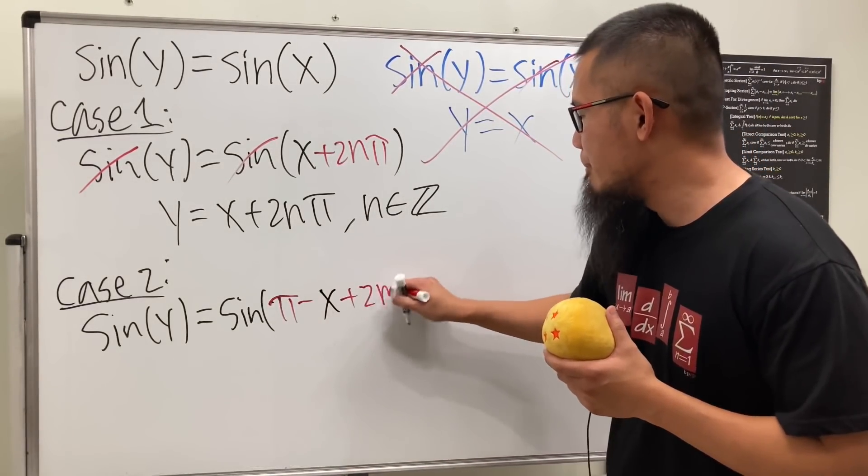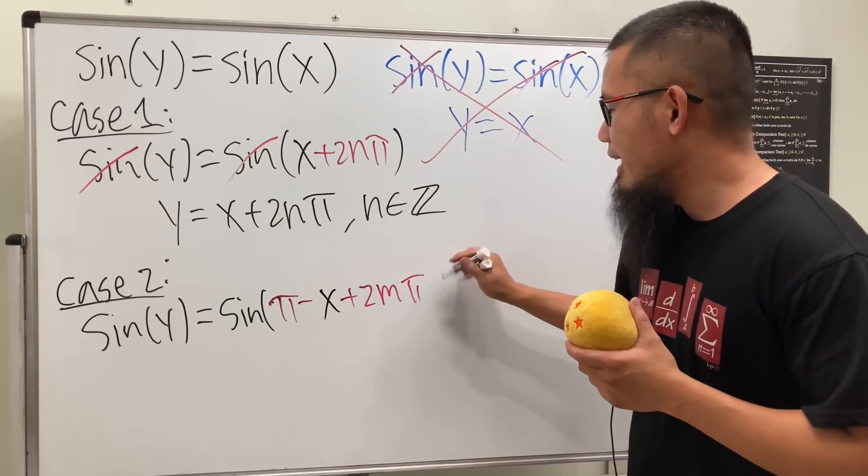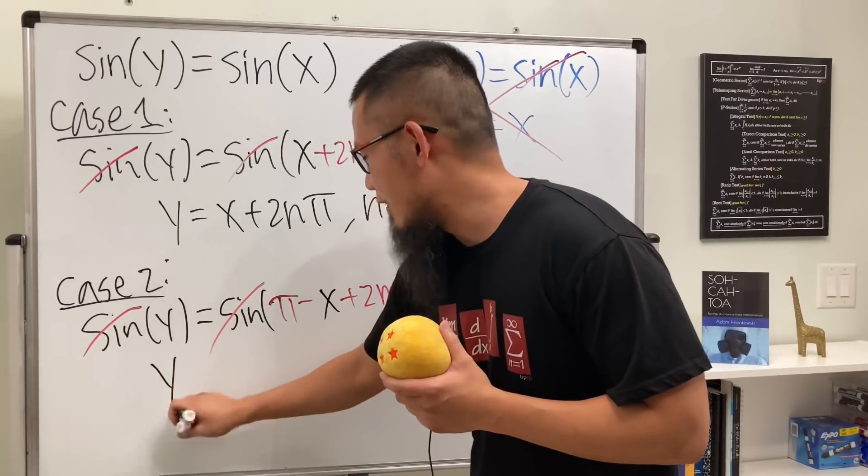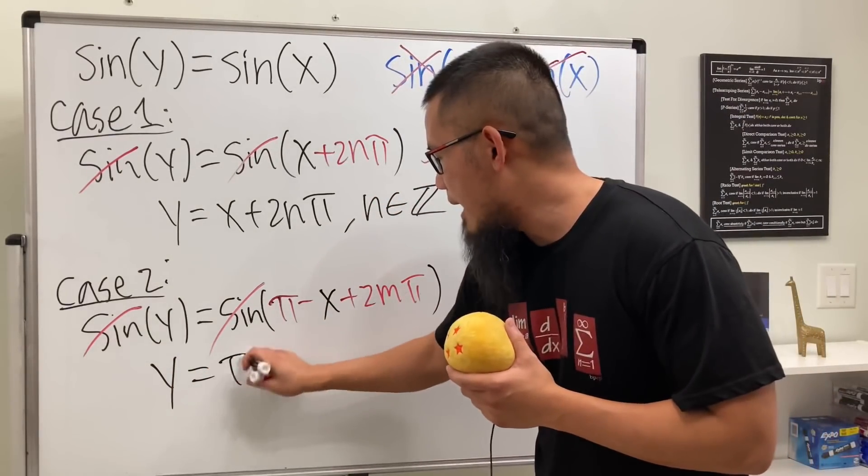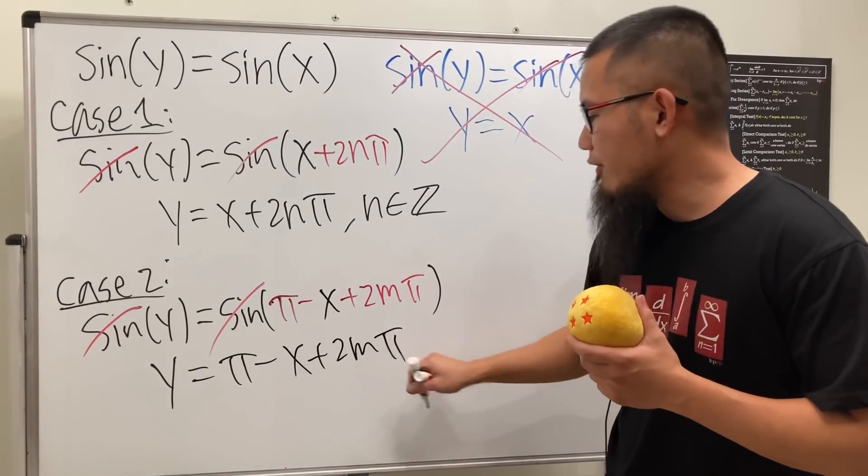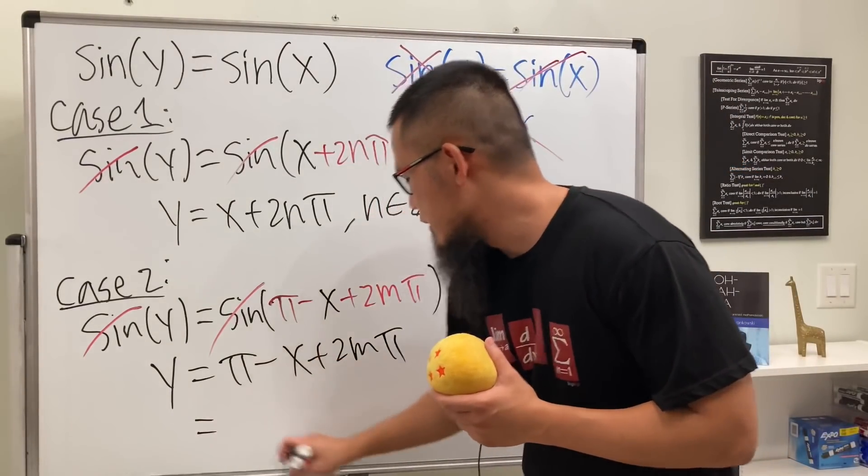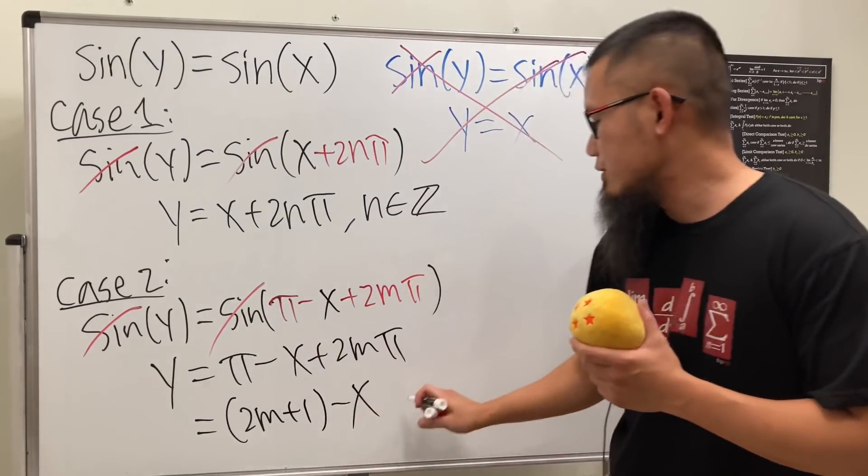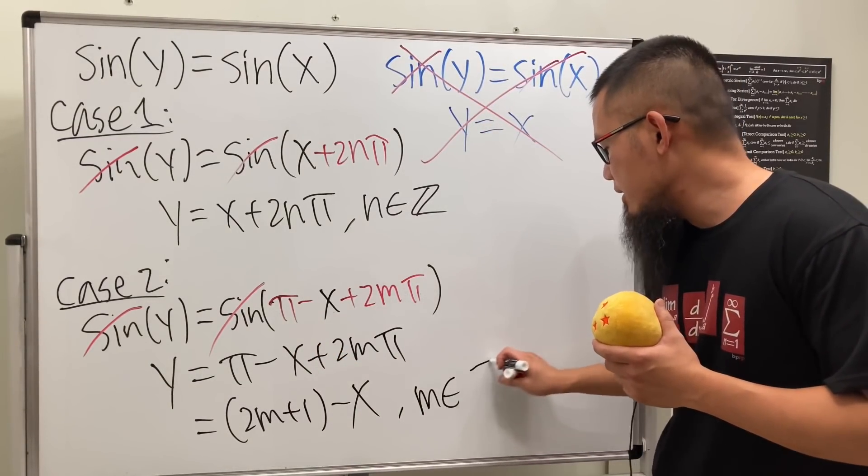Let's cancel the sine and you can see we have y equals all this, which is π minus x plus 2mπ. We combine the π's together so we have (2m + 1)π minus x. Again, m is an integer, and we are done.